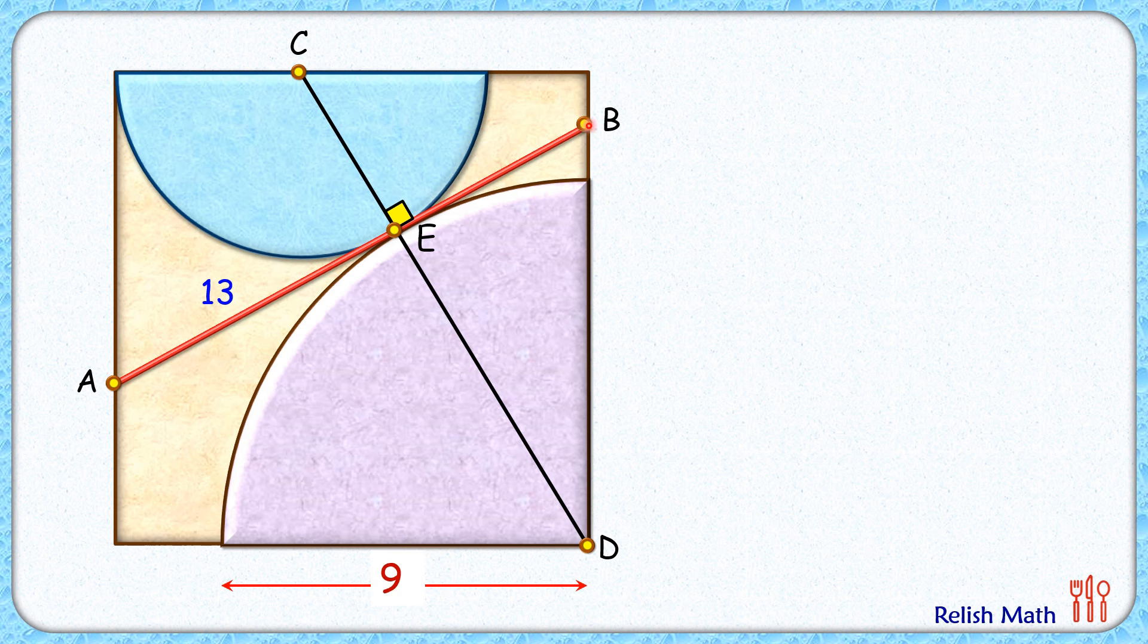So we'll prove now that CD is 13 cm, and from that we'll get the radius of this yellow semicircle. From that we'll get the side length of the square, and then we'll get the area of the square. So let's first find the length CD as 13 cm.